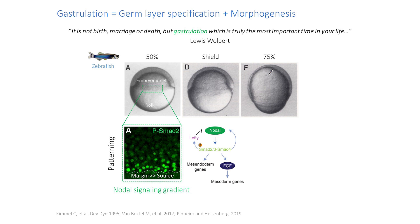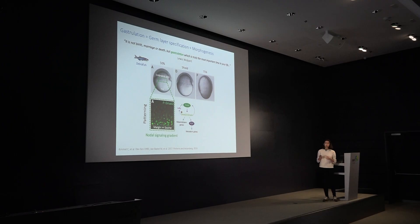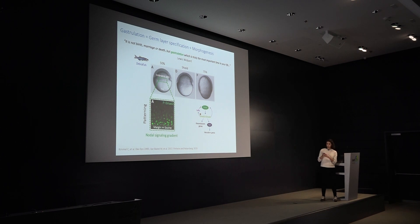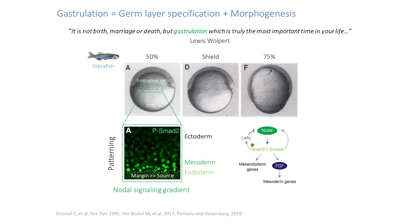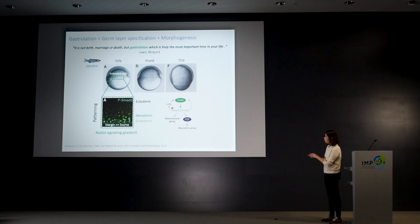Nodal was proposed to function as a morphogen — the idea is that it triggers cellular responses in a concentration-dependent manner. Cells at the edge of the tissue with the highest levels of phospho-Smad2 will become fated to endoderm, whereas cells that receive intermediate levels of signaling will become mesoderm, and cells that receive very low levels of signaling will become ectoderm. Basically, using this gradient, cells acquire different fates.